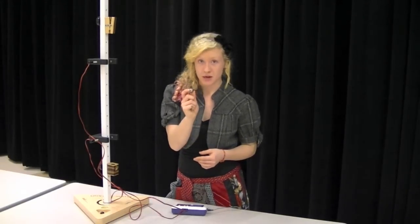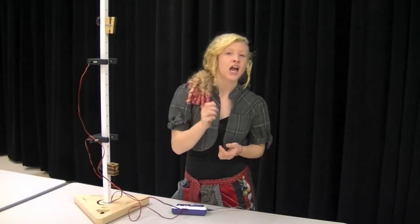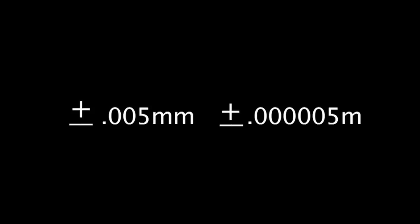Now, something we'll need to measure is the ball's diameter. Because v initial equals the ball's diameter over TA. Be sure to use a micrometer when measuring this. And remember that the reading error is plus or minus .005 millimeters or plus or minus .000005 meters.